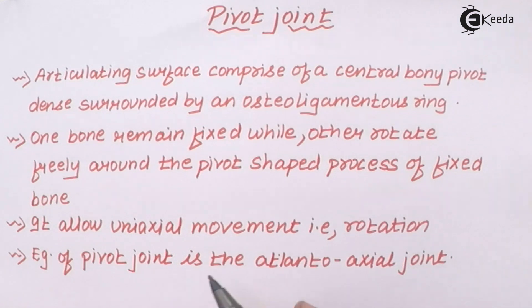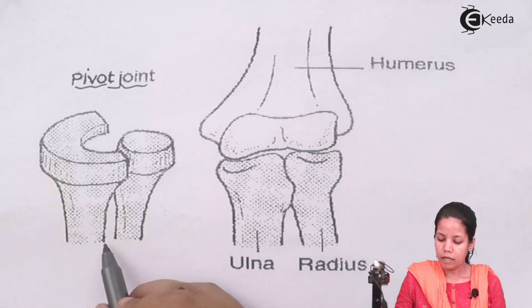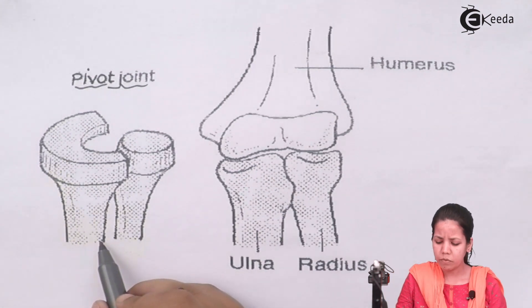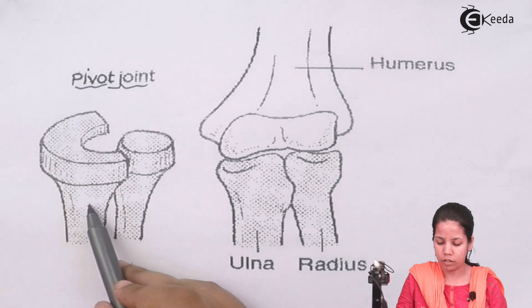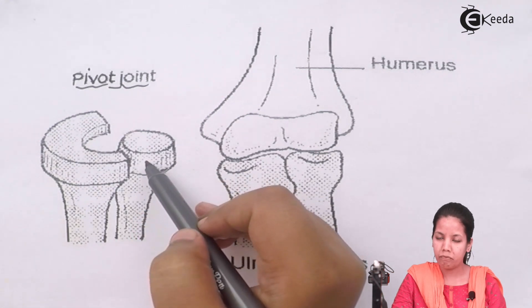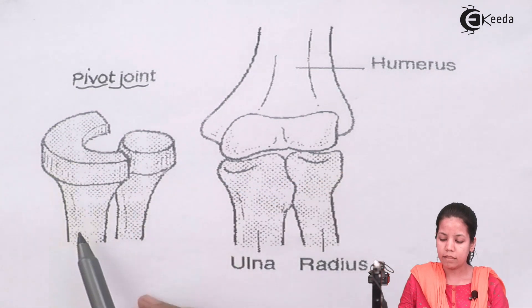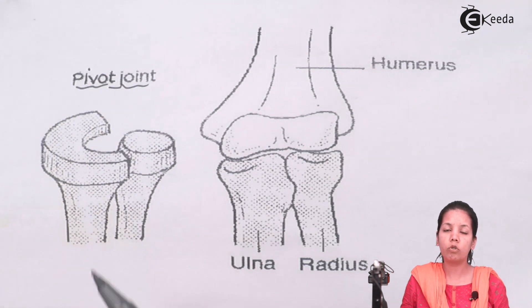An example of pivot joint is the atlanto-axial joint present in our body. One part of the bone remains attached at a particular location and the other part, attached to the pivot joint, rotates freely. The rotating part is always in rotational motion — it cannot perform sliding, to-and-fro, or backward-and-forward motion. That is impossible.